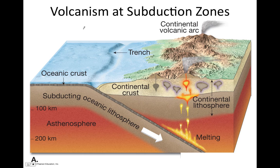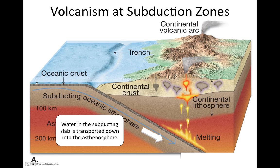Volcanism occurs along subduction zones, but why? The answer is quite surprising and very unintuitive: the reason for this volcanism is water. This oceanic lithosphere formed at a mid-ocean ridge from molten rock cooling and solidifying, and in that process water gets trapped in the rock at a molecular level — water molecules bonded into the crystalline solid structure of the rock. That water is then transported down into the mantle by the subducting oceanic lithosphere.